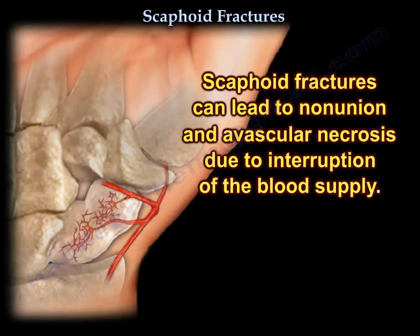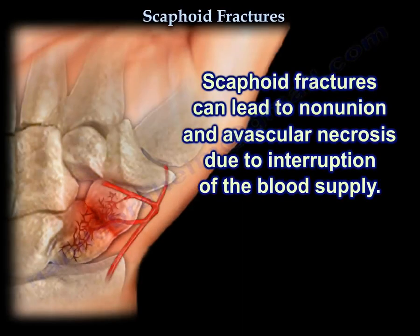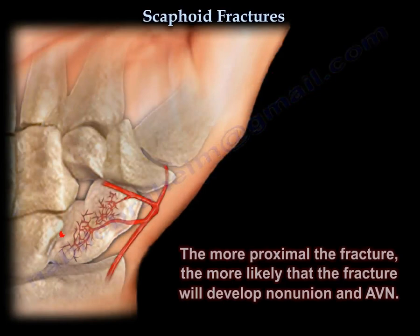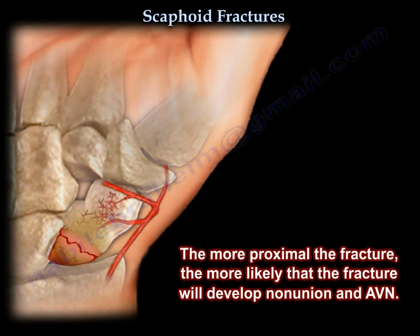Scaphoid fractures can lead to nonunion and avascular necrosis due to interruption of the blood supply. The more proximal the fracture, the more likely it will develop nonunion and AVN.